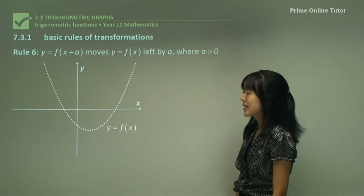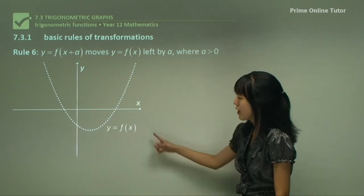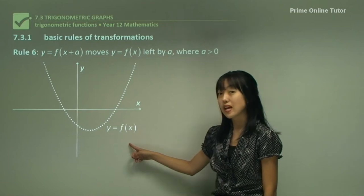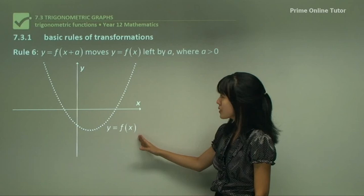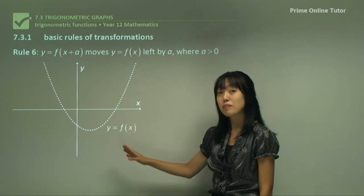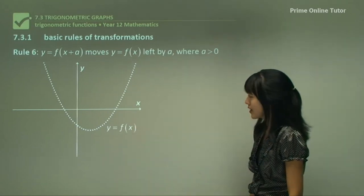Next rule is rule six. What would happen if f of x becomes f of x plus a? Opposite to what we saw in rule five, this one would shift to the left by negative a as shown here in the yellow.